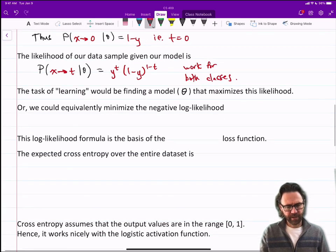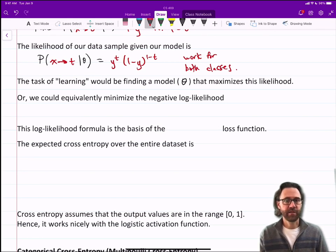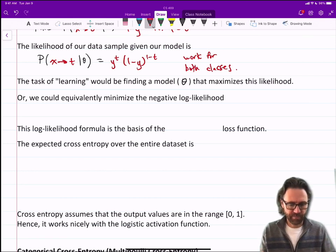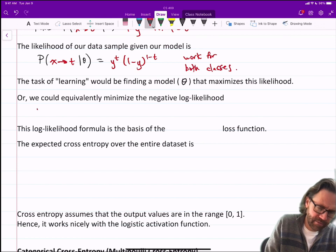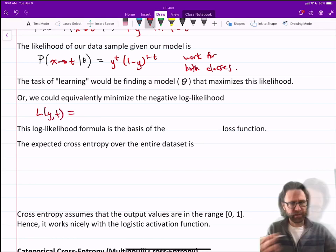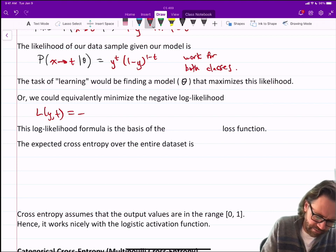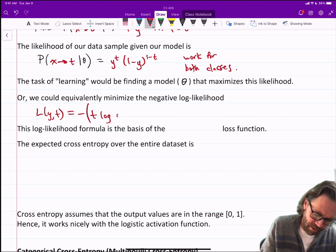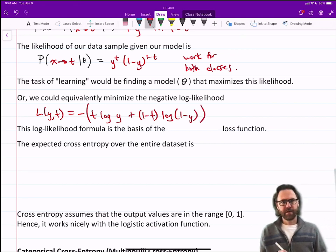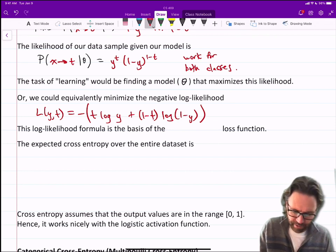We could equivalently minimize the negative log likelihood, which is what the cross-entropy is. L of y, t equals - (t log y + (1-t) log(1-y)). This log likelihood formula is the basis of the cross-entropy loss function.